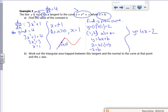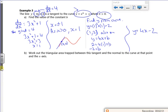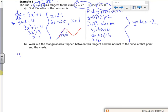So then it says, work out the triangular area trapped between this tangent and the normal to the curve at that point. So what have we got? I've got y = 4x - 2. So that's the tangent, isn't it?